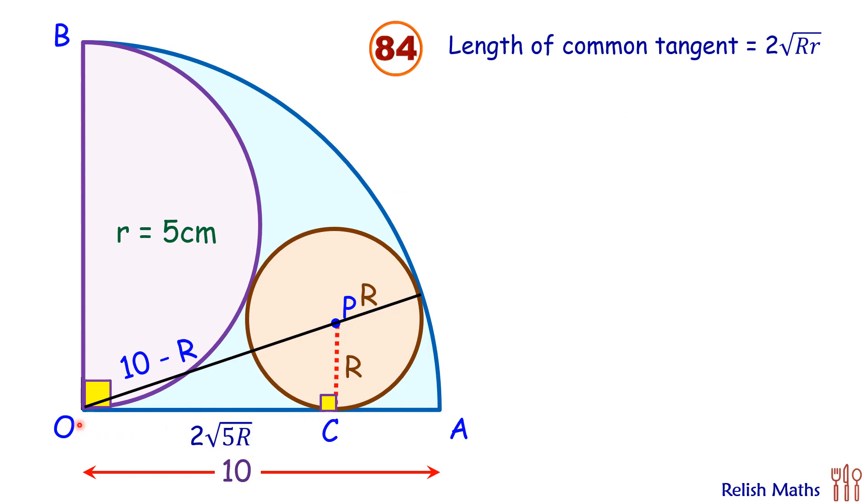Now if you look in triangle OCP, we have got all three sides. Let's apply Pythagoras theorem and put the values in this. So OC is 2 times root 5R whole square, plus PC is R, and OP is 10 minus R.